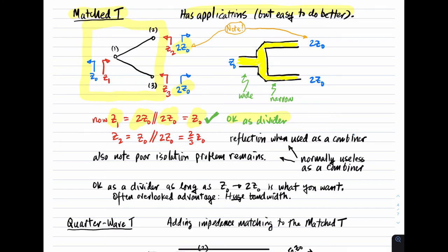As a combiner, it's not so great. Looking into port 2, you see Z₀ in parallel with 2Z₀, which is 2/3 Z₀ — so you get reflection when this is used as a combiner. You still have the port isolation problem. However, this thing has huge bandwidth; there's nothing frequency-dependent about it. The reason you might want to go with this as a divider, even dealing with the Z₀ to 2Z₀ issue, is because the bandwidth is huge.